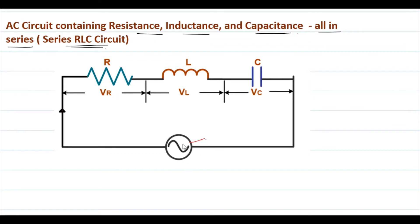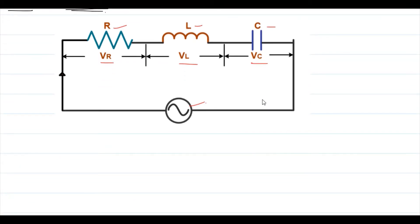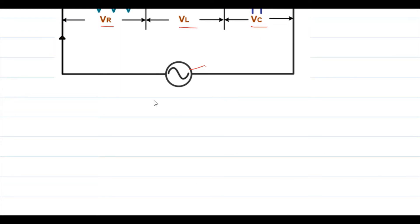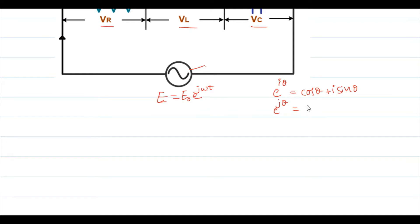In this circuit, the source provides a voltage, and resistance R, inductance L, and capacitance C are connected in series. The voltage drop across R is V_R, across L is V_L, and across the capacitor is V_C. Let the alternating voltage source be E = E₀ e^(jωt), using the complex exponential property e^(jθ) = cos θ + j sin θ.